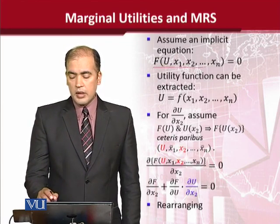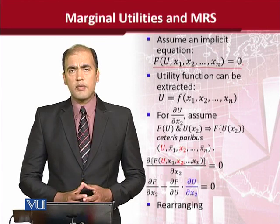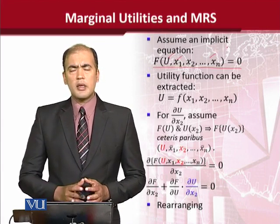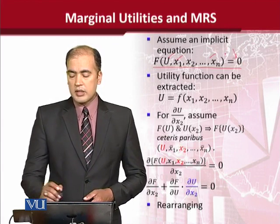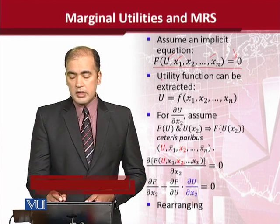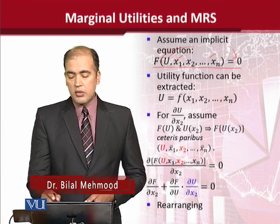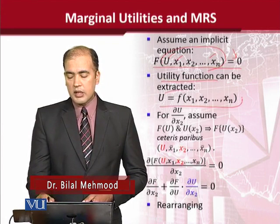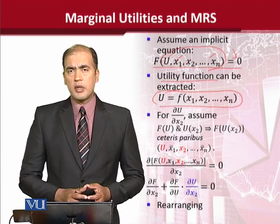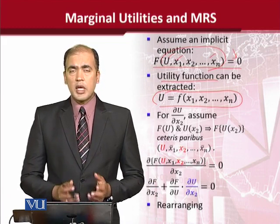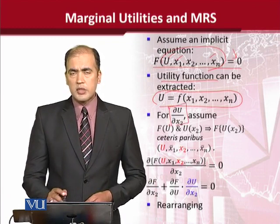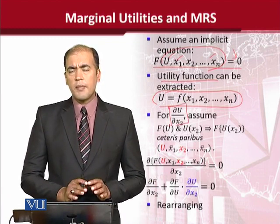We are starting with an implicit function in which there are a number of independent variables and none of them appear on the right-hand side. We cannot see any variable on the right-hand side. This is the function from which we can extract utility. We have extracted the utility function from it, because we are concerned about utility as the dependent variable. However, it was not explicit, so we have tried to make it explicit, and we still have to go through some steps to calculate some values.